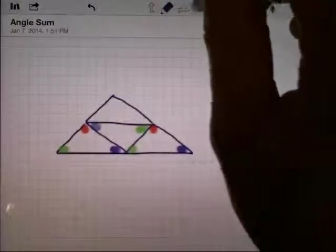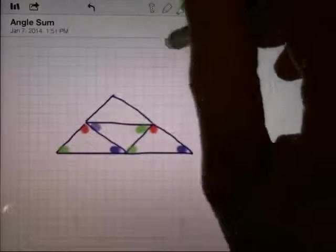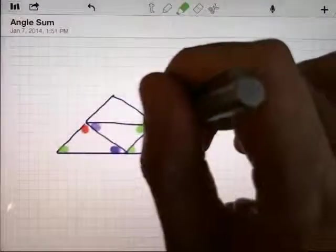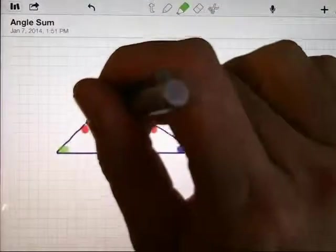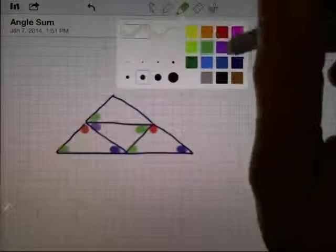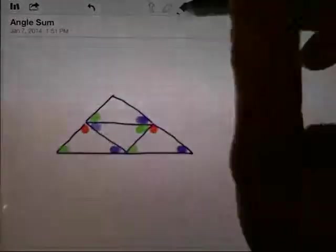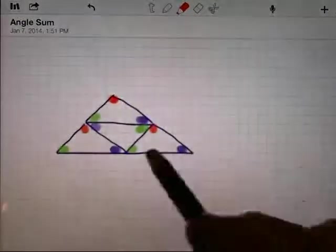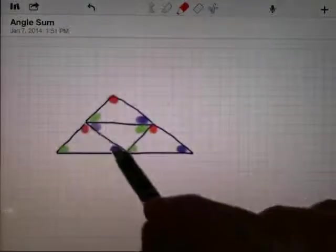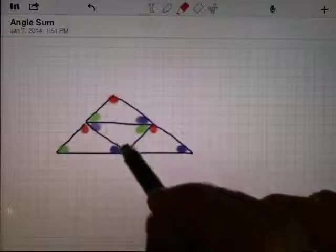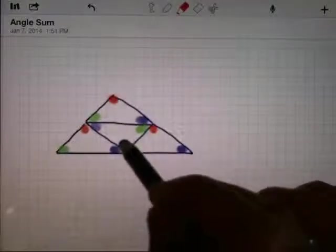So now I've got the green angle here, the blue angle here, and the red angle up on top. And now maybe you can see this parallelogram where the red is opposite of this one, so this has got to be red.